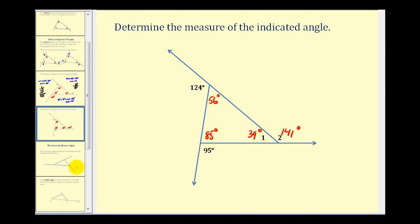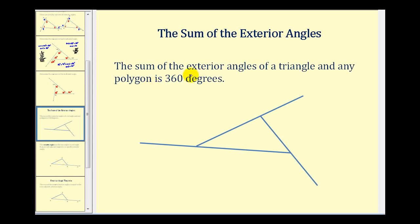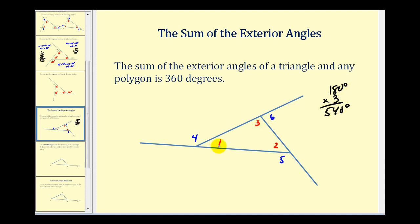Let's talk about a couple of theorems that involve exterior angles, which we'll prove in the next couple of videos. The sum of the exterior angles of any triangle — as well as any polygon — is always 360 degrees. The interior and exterior angles form three linear pairs, so the sum of all six angles is 180 times 3, which is 540 degrees. Since the sum of the interior angles of any triangle is always 180 degrees, 540 minus 180 equals 360 degrees. So the sum of the exterior angles of a triangle will always be 360 degrees.